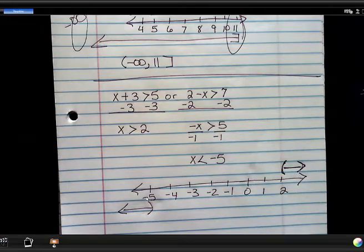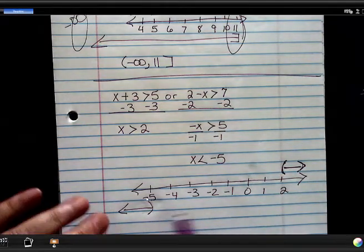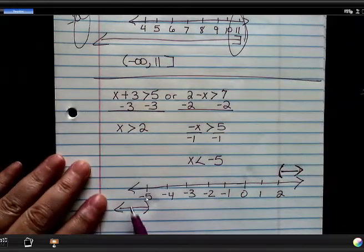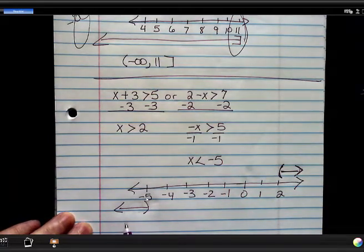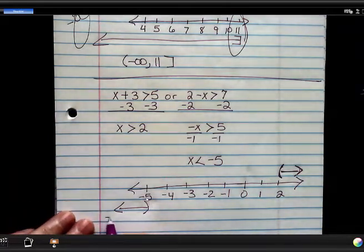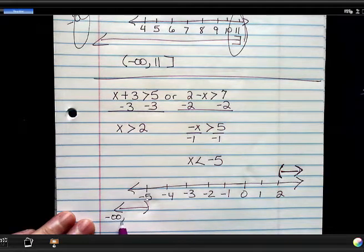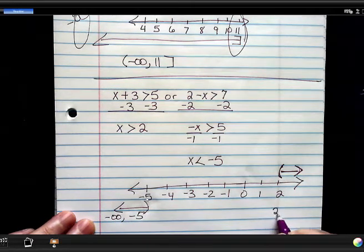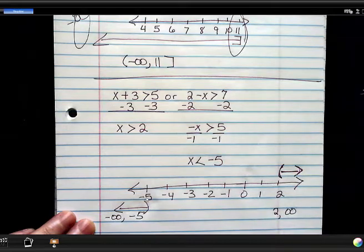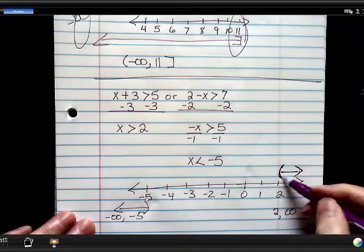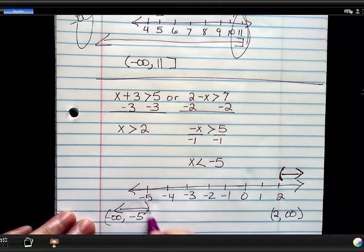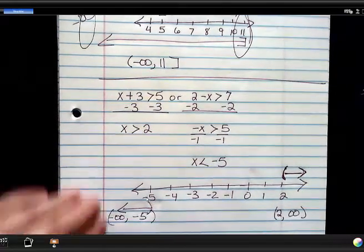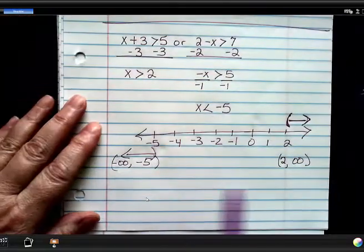So now to combine these, I'm going from negative infinity to negative 5. And then I'm going from 2 to positive infinity. Now, these are both parentheses. So I have both of these in the same thing.